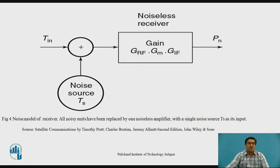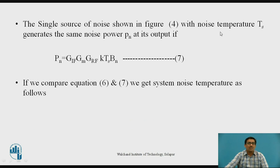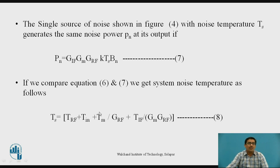Figure 4 shows the noise model of the receiver where all noisy units have been replaced by one noiseless amplifier with a single noise source TS at the input. The noise source TS is added to the temperature input TN and given to the noiseless receiver, giving output PN. The single noise source with temperature TS generates the same noise power PN if PN = GIF × GM × GRF × K × TS × BN (equation 7). Comparing equations 6 and 7, the system noise temperature is: TS = TRF + TN + TM/GRF + TIF/(GM × GRF). This is equation 8 — the system noise temperature.